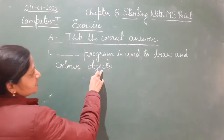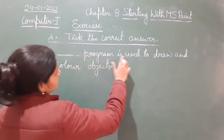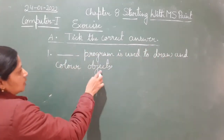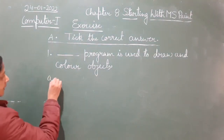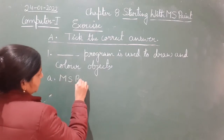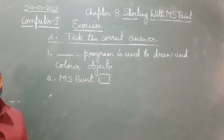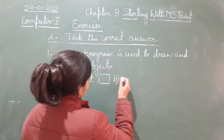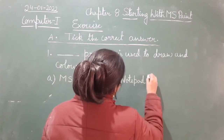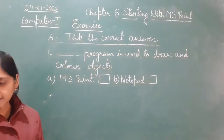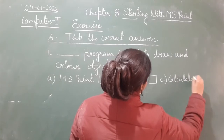So children, what are these objects? Objects means the things which we draw — the pictures we make — those are the objects here. Now, which program is used to draw and color objects? Let us see the options. First option is A: MS Paint. Second option is B: Notepad. And third option is C: Calculator.